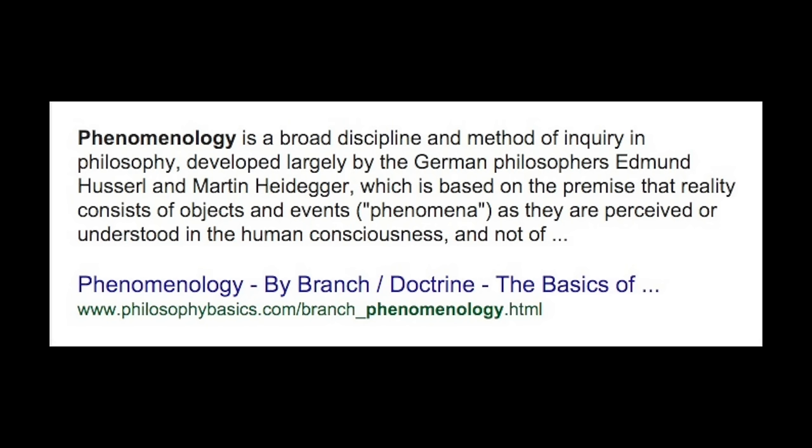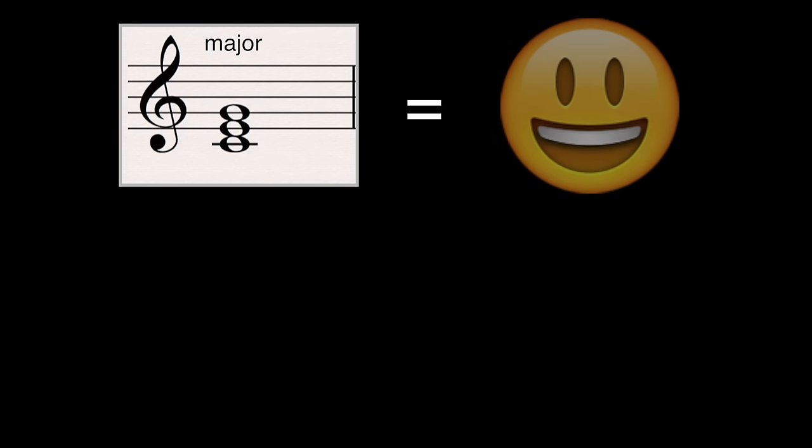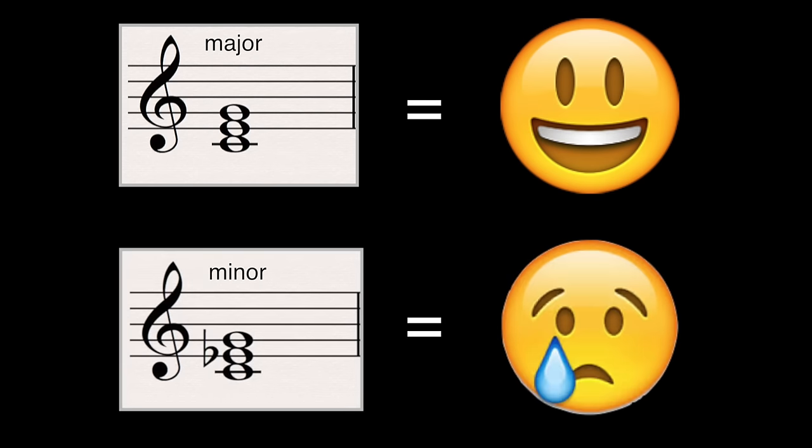How we experience the music versus what the music is. You probably have already had a little bit of a phenomenological understanding of ear training already, because most of the time when teachers are teaching major and minor chords, they'll say that major chords are happy and minor chords are sad. This directly relates to the emotional content that we find in music and our experience of music as it is.